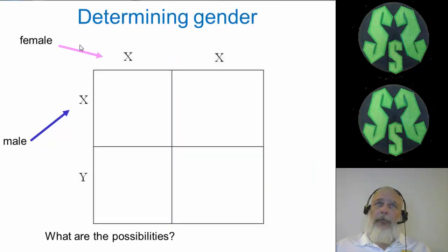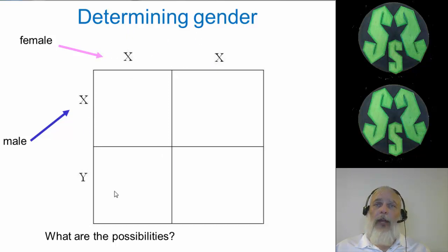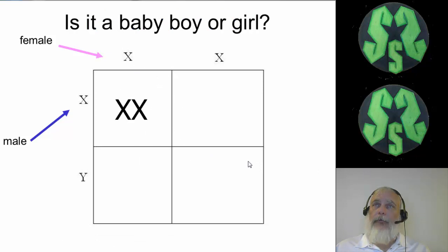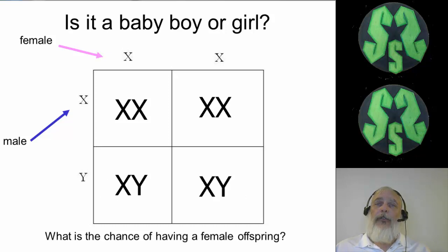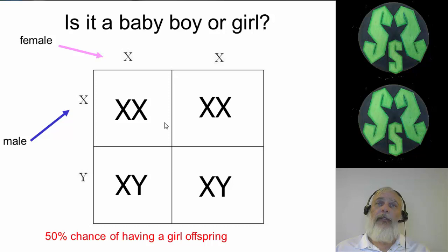So determining gender goes like this. The female is going to give an X or an X. The male will give either an X or a Y. If you work out this Punnett square, you get XX, XX, XY, and XY. So what is the percent chance of having a female offspring? Two out of four chances are female — that's 50%.